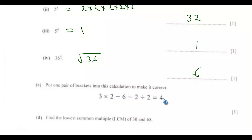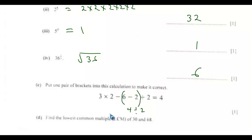For part c, put one pair of brackets into this calculation to make it correct. If you place brackets here, you follow BODMAS. You start with the brackets, so this will be 6 minus 2, which gives 4, then divided by 2, and then we have 3 by 2 minus 6.